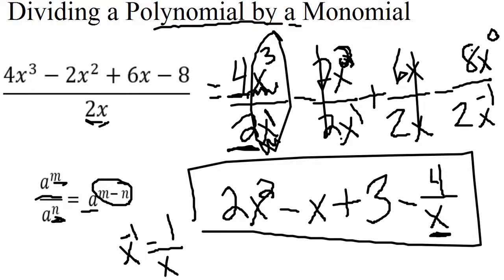Alright, so this gives us our final answer here. 2x² minus x plus 3 minus 4 over x. If you need to review the negative exponents here, take a look at the video for that.